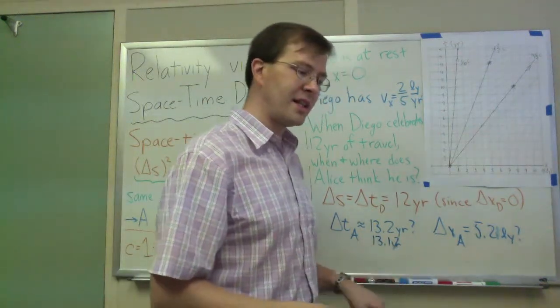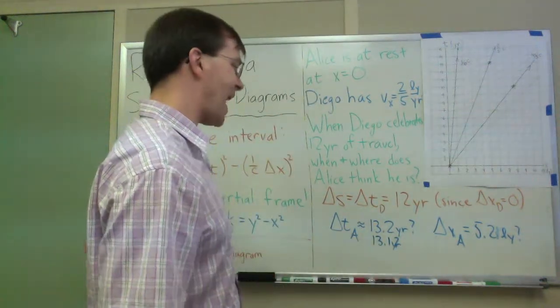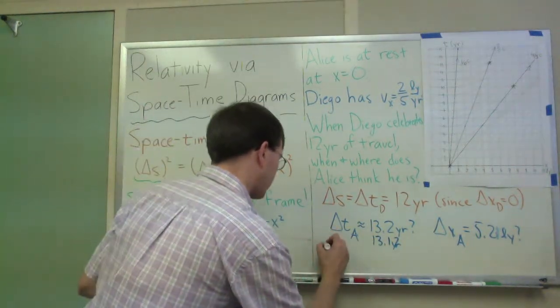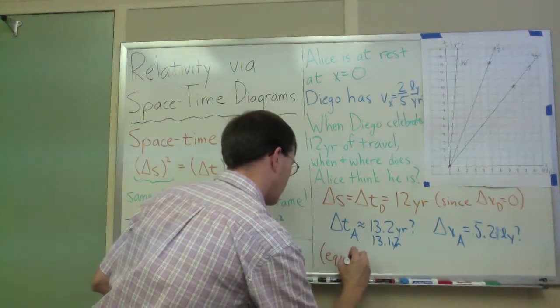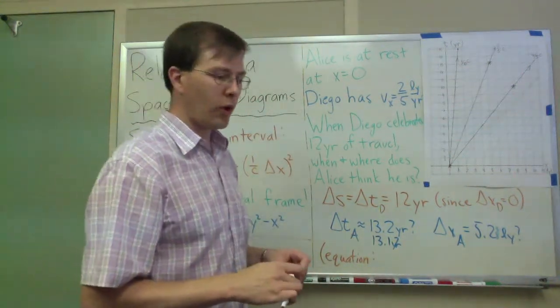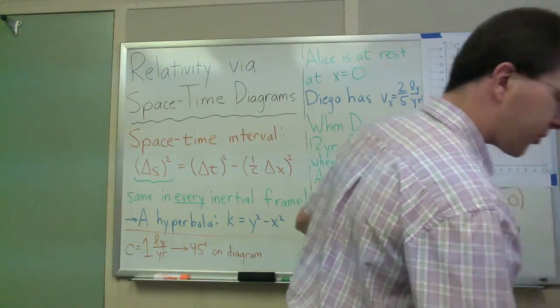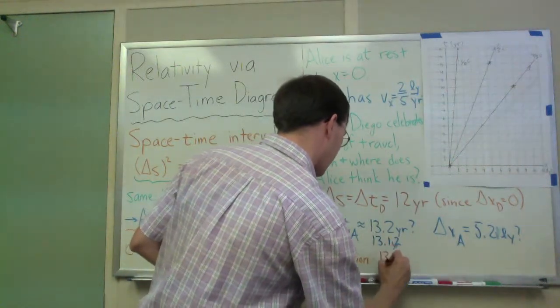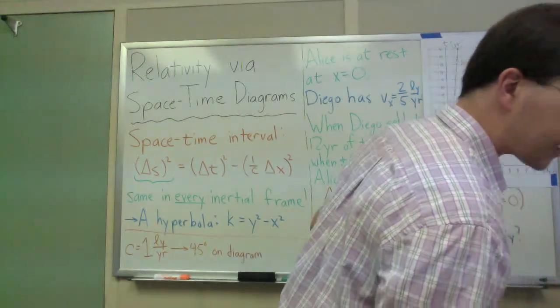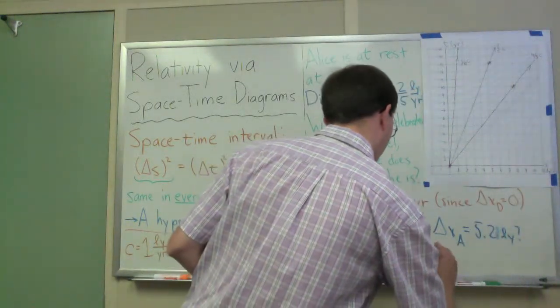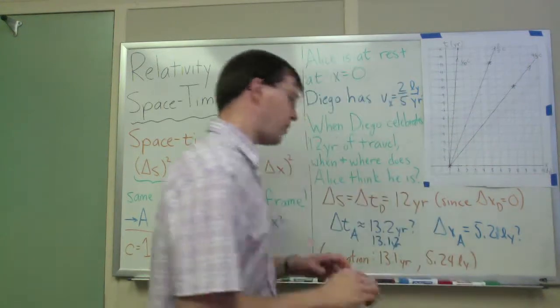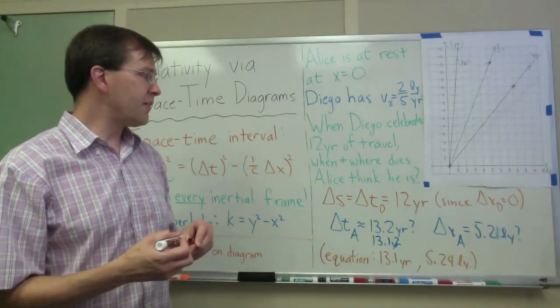It turns out that when I did this calculation exactly, using this equation, using math, using the equation, what I got was thirteen point one years and I got a distance of five point two four light years. So you can see, even going the other way, counting along Diego's birthdays along the way.